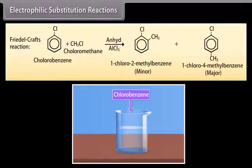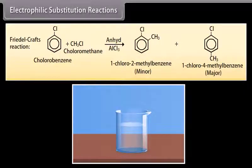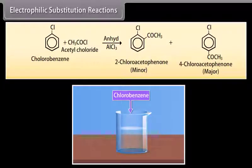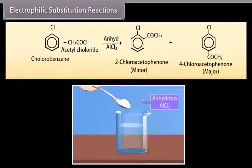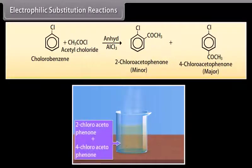Friedel-Crafts reaction. When chlorobenzene solution is mixed with chlorobenzene and then we add some pieces of anhydrous aluminum chloride, it reacts to give 1,2-methylbenzene which is a minor product and 1,4-methylbenzene which is a major product. When chlorobenzene solution is mixed with acetyl chloride and then we add some pieces of anhydrous aluminum chloride, it reacts to give 2-chloroacetophenone which is a minor product and 4-chloroacetophenone which is a major product.